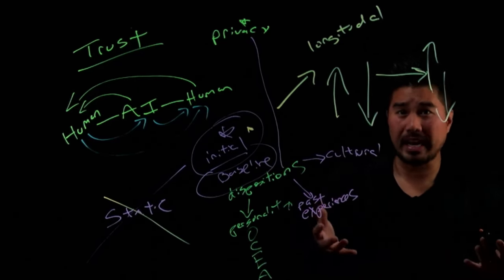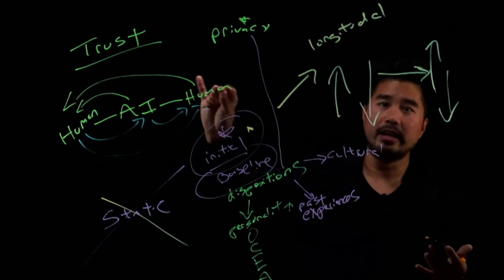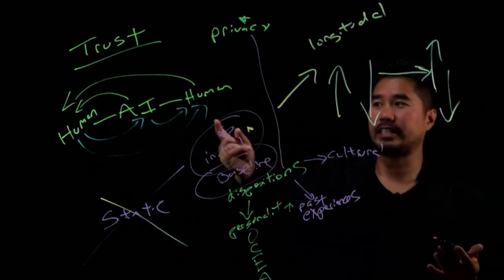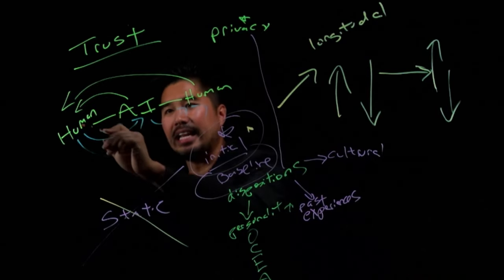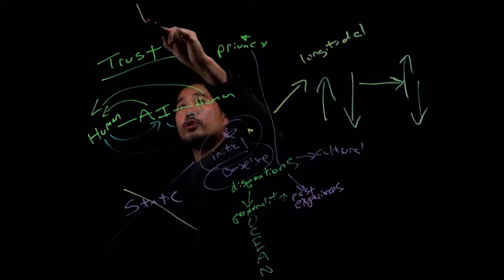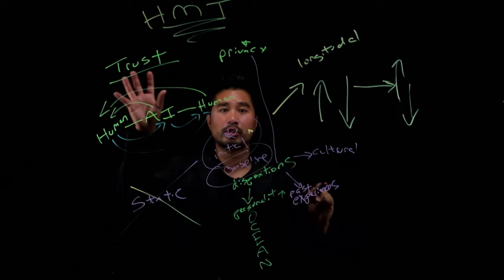You're not having a teammate anymore. You're just having somebody, just some AI that just speaks. And you're not listening to it. Hence the bi-directionality that is the key to human machine team trust.